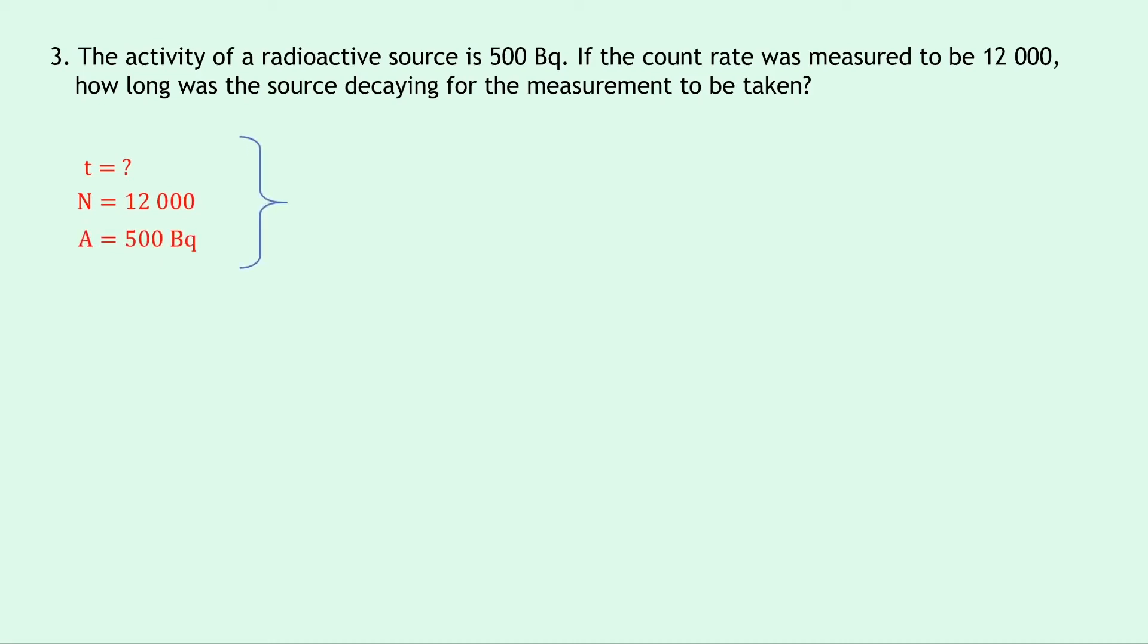So writing down our equation we have A equals N over T. Rearranging for time now we can cross multiply which is the same as swapping the A and the T, so we end up with T equals N over A, and substituting in the numbers gives us 12,000 divided by 500, which if you put into your calculator should give an answer of 24 seconds.